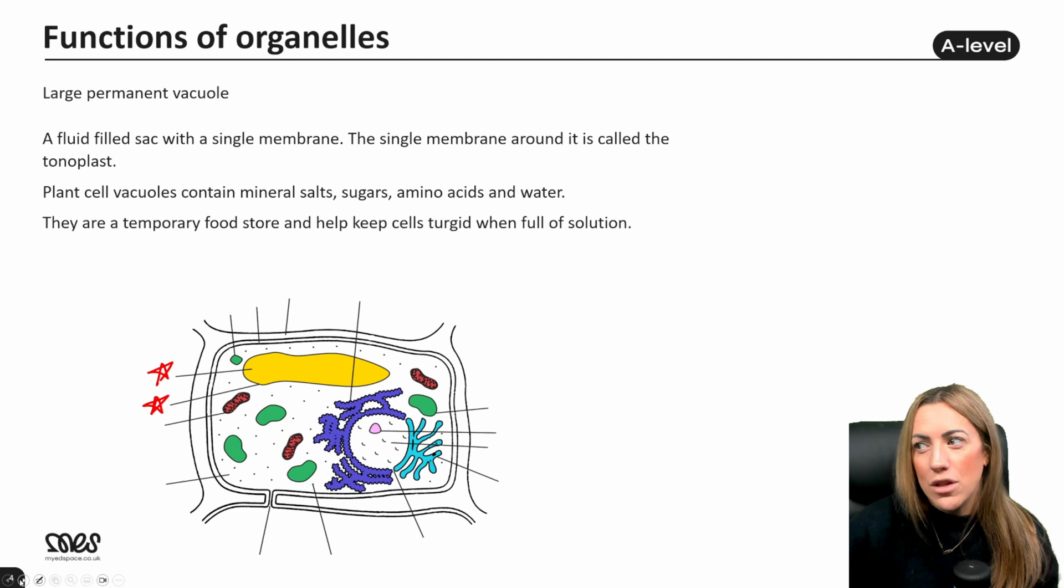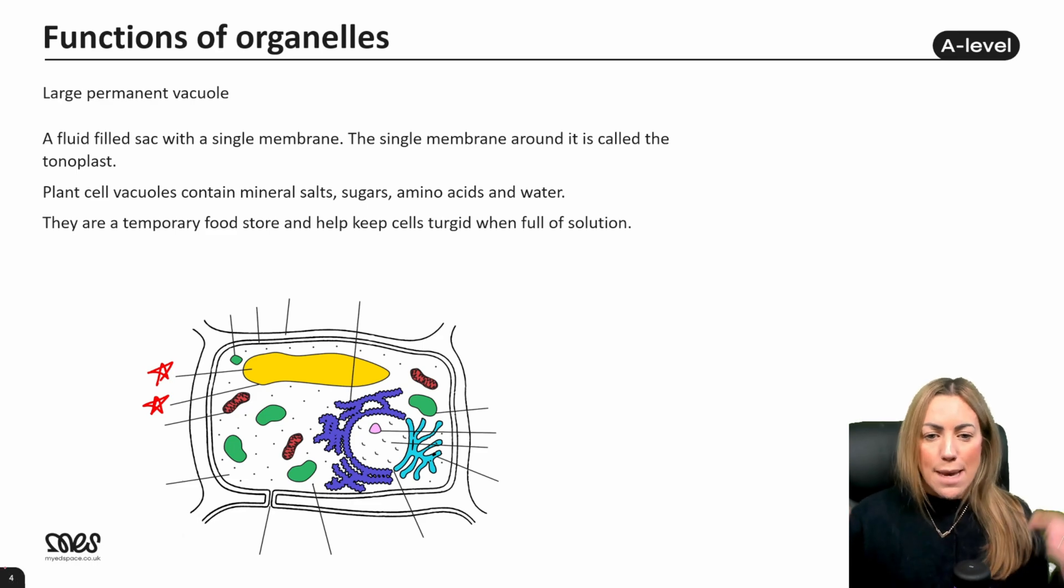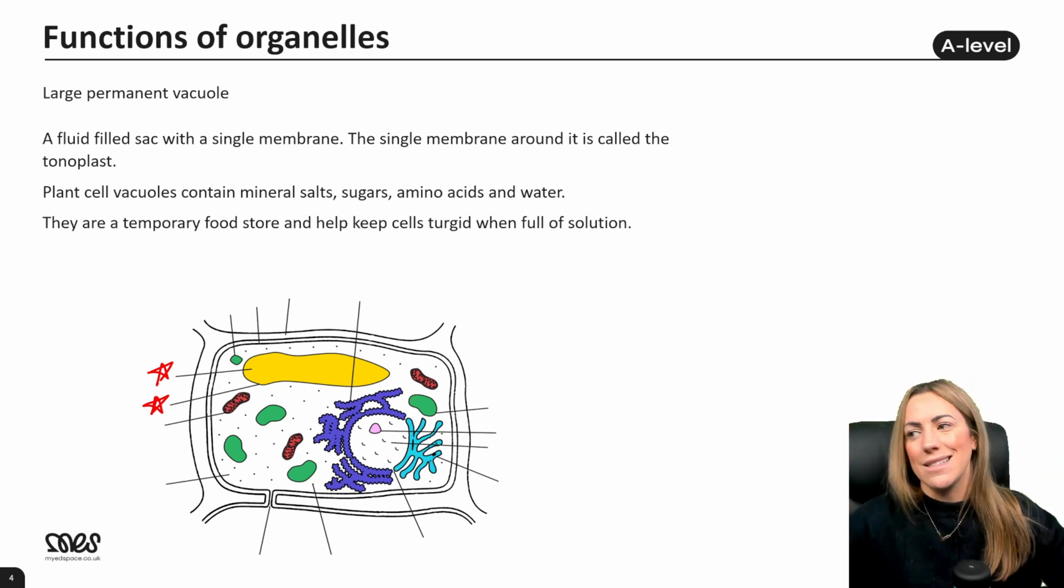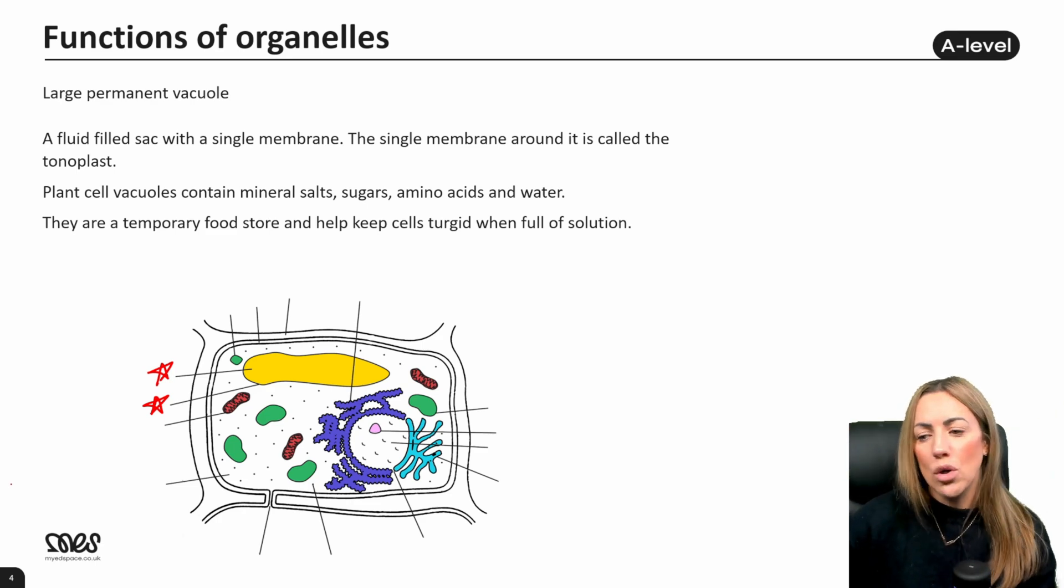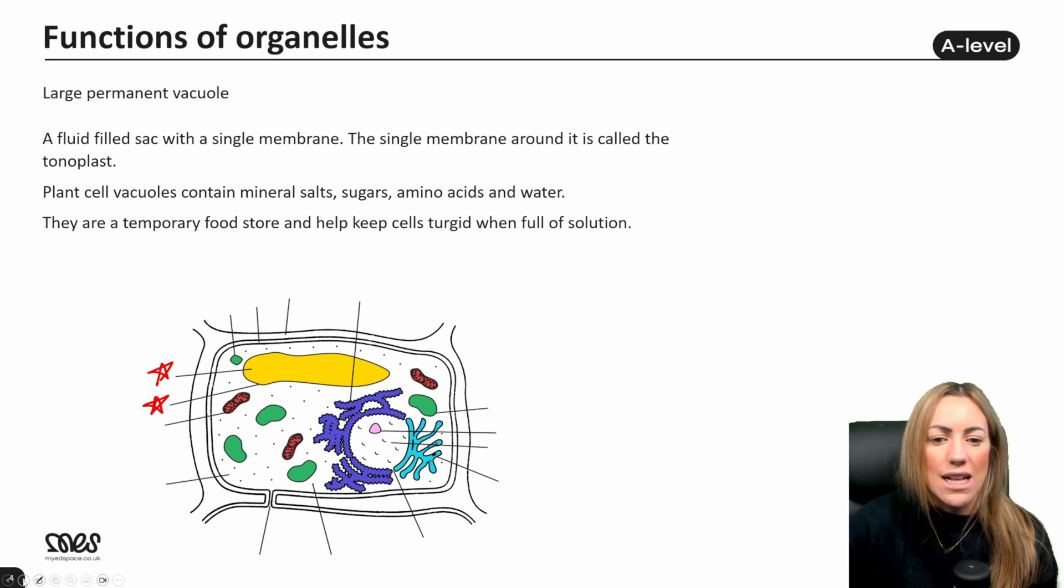It's a temporary food store, and it also helps to keep plant cells turgid, because when it's full of solution, it pushes out against the cell membrane, which pushes out against the cell wall, and it will help to maintain the shape of the cell, give it some structural support, and what we say is it keeps the cell turgid.